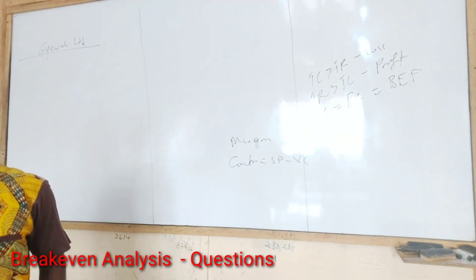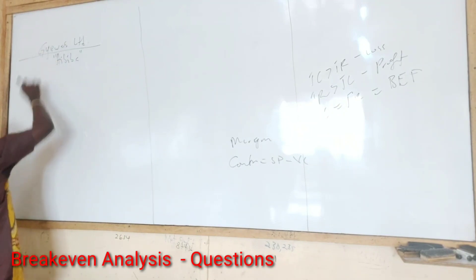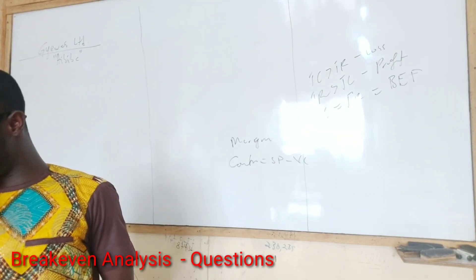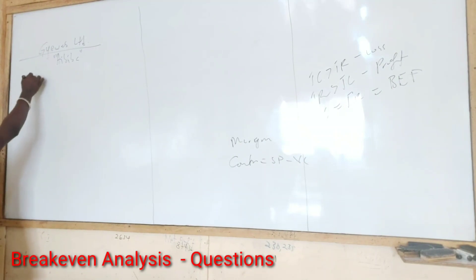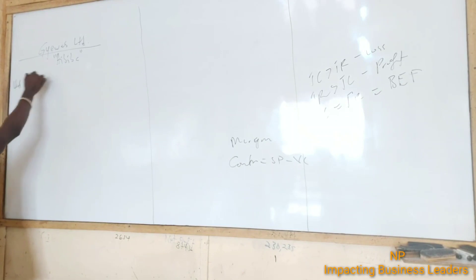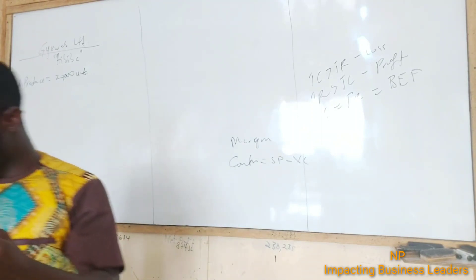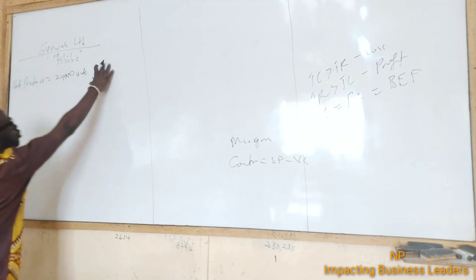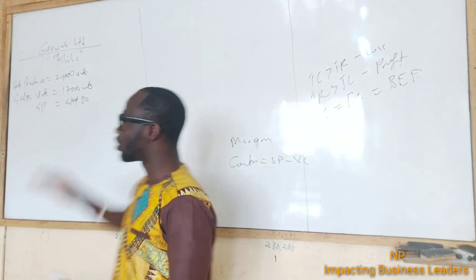G1 Limited manufactures bottled fruit juice called Habiba. During the first year of operation, for the fiscal year ending 31st December 2018, the company produced 20,000 bottles of Habiba but was able to sell 17,000 bottles at $30 per bottle. So units produced is 20,000 and sales units was 17,000, with a selling price of $30 per bottle.